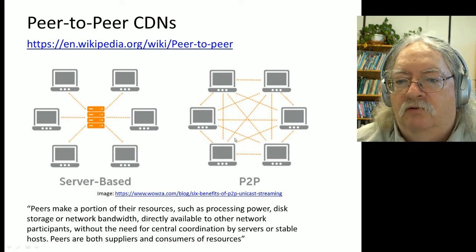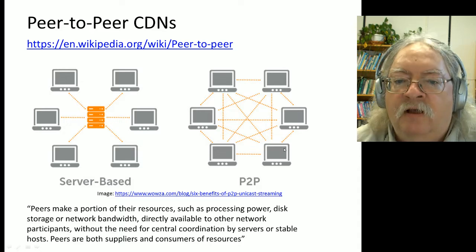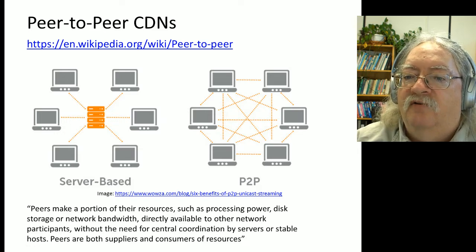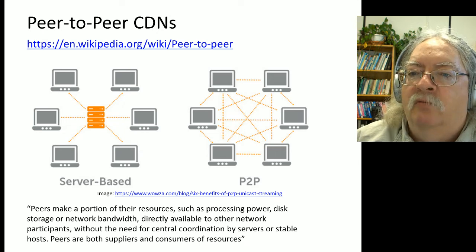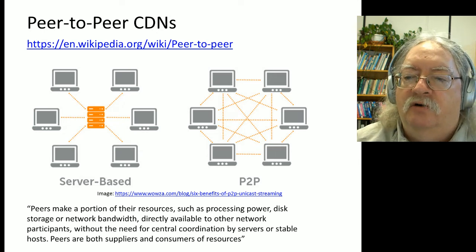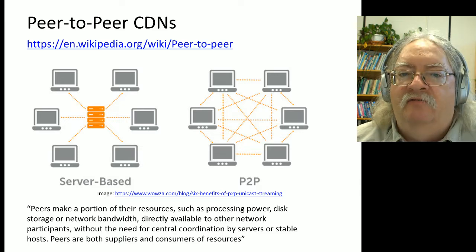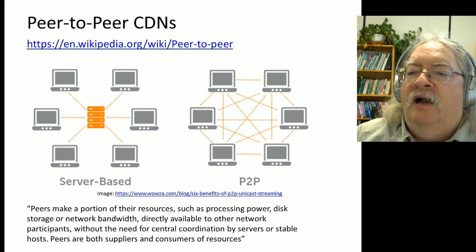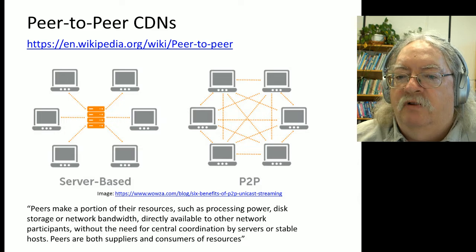We're all in a network together. By using peer-to-peer CDN software, we're offering up a portion of our resources - maybe some processing power, disk space, or network bandwidth - in order to make resources available to each other. Often these will be resources we've consumed ourselves. So I might view a website and save that website on my computer, and then when somebody else is looking for that same website, my computer might be the nearest place where they can find it.